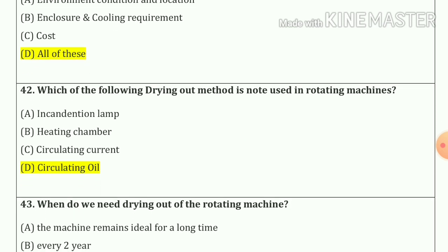Question number forty-two: Which of the following drying out methods is not used in rotating machines? So our answer is circulating oil — option D.